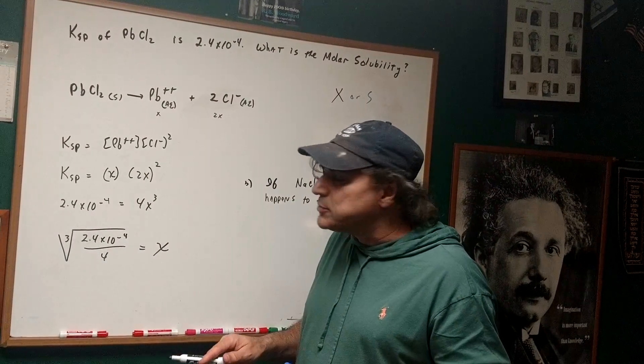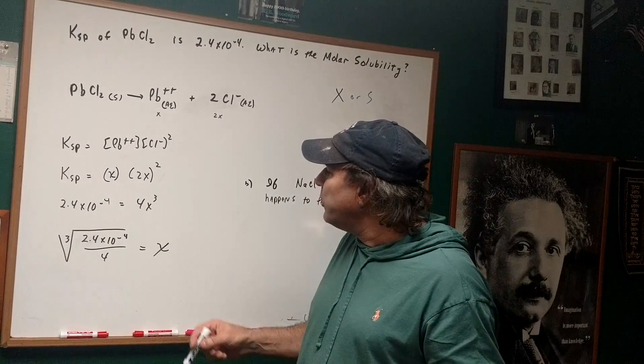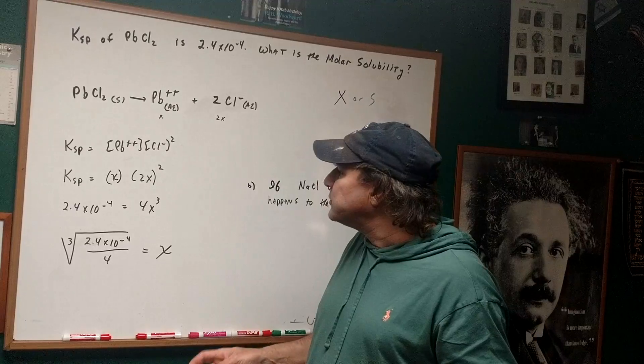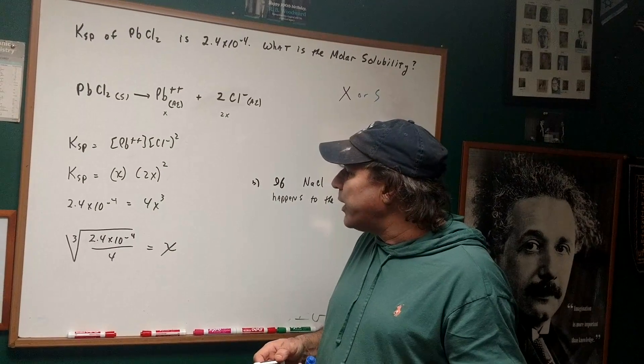All we're going to do is set it up. We don't need to solve it for the DAT. So we're going to divide by 4 and take the cube root. Therefore, the molar solubility would be the cube root of 2.4 × 10^-4 divided by 4.